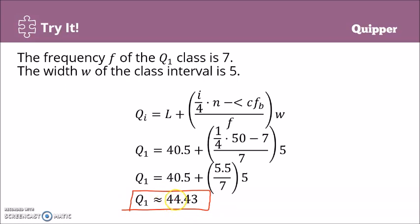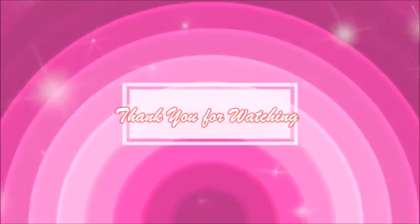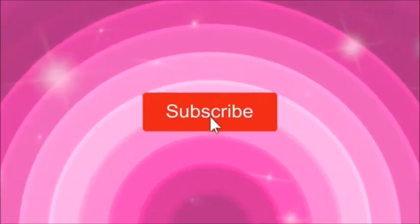Therefore, our first quartile is 44.43. It means that 25% of the data — or 25% of the responses — are below 44.43. We can also say that 75% of the data or 75% of the responses are above 44.43.